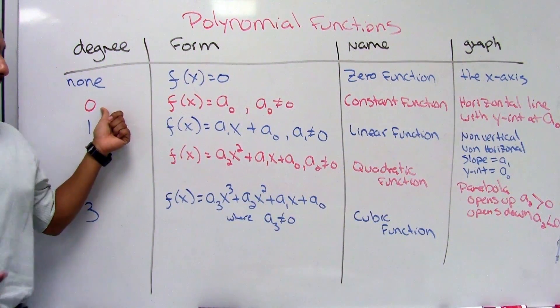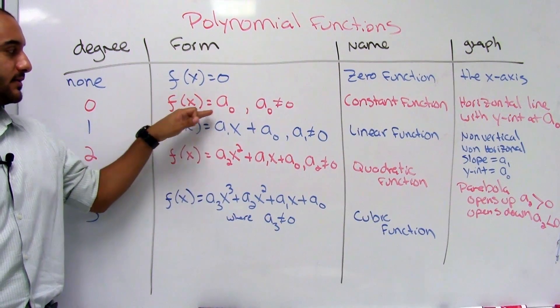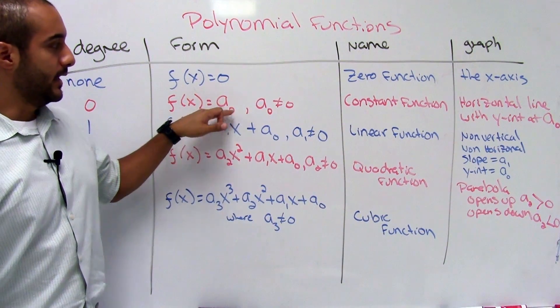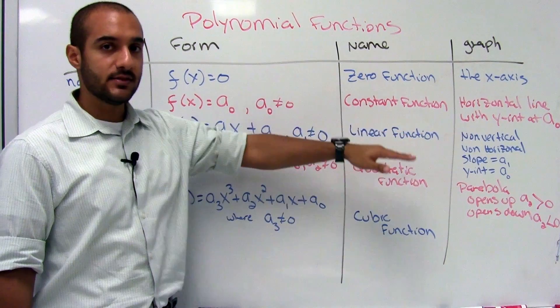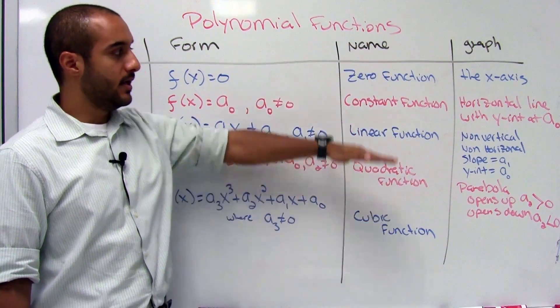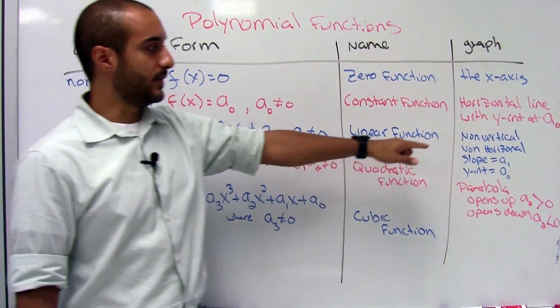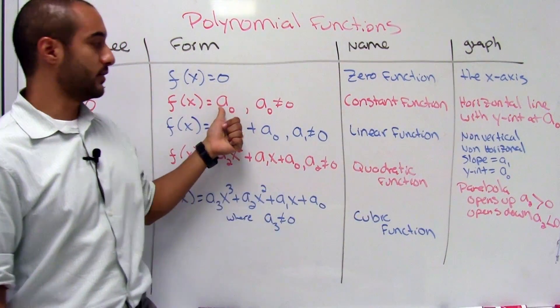When the degree is zero, it'll look like this, f of x is equal to a sub zero. And that's called the constant function and it ends up being a horizontal line. And the horizontal line will be wherever this number is.